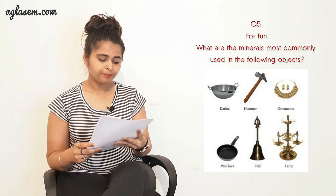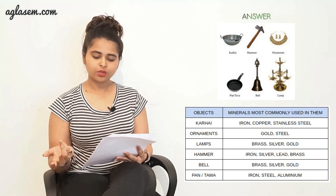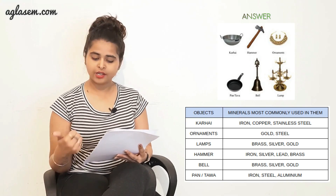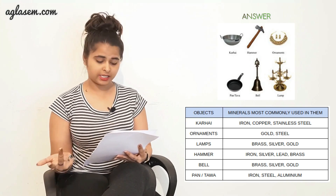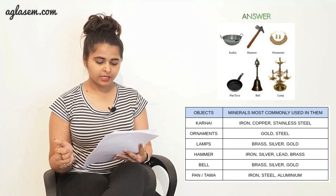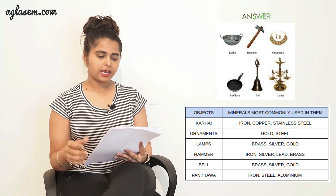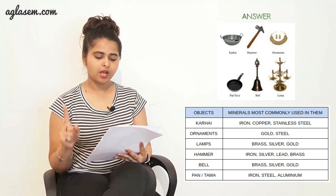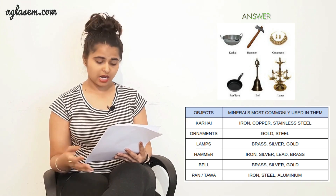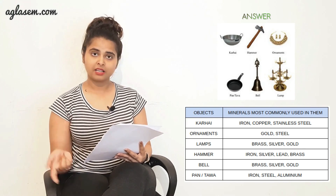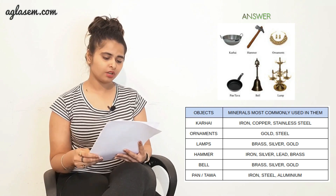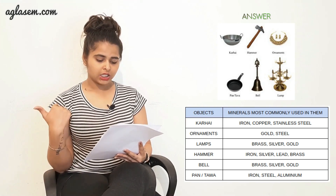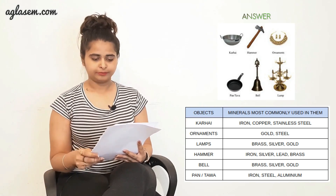The objects are shown on screen. The minerals commonly used are: in kadhai - iron, copper, and stainless steel; in ornaments - gold and silver; in lamp - brass, silver, and gold; for hammer - iron, steel, lead, and brass; for bell - brass, silver, and gold; for tawa pan - iron, steel, and aluminium. These are the exercises of this chapter. I hope you have noted them down.